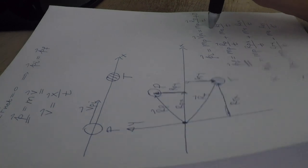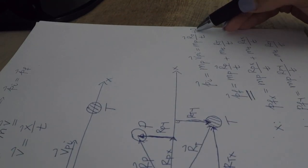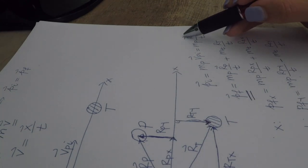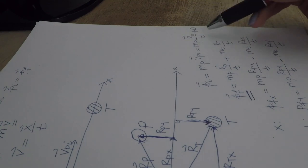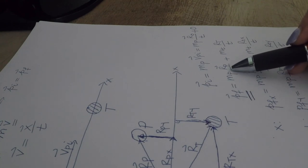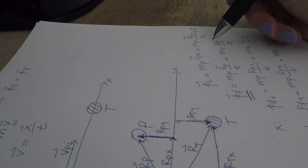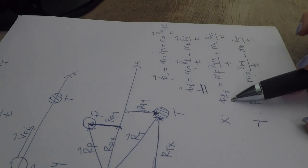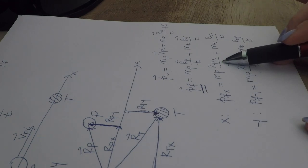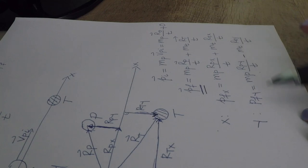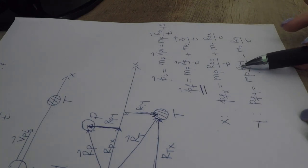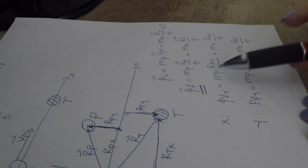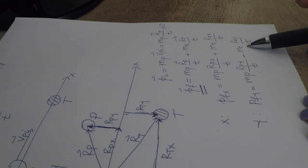Then you can write down the equations for momentum. Initially the target was at rest so its momentum was zero, and the projectile was moving with some initial velocity, calculated by dividing the displacement of the projectile marble by time. For the final momentum, both projectile and target will have final momentum. Because this is happening in 2D, you have two equations — x and y components. Because the target went to the fourth quadrant, the y component of the momentum for the target is going to be negative.